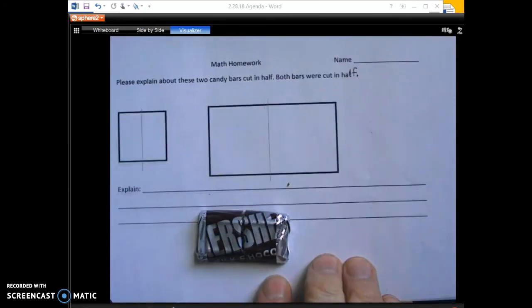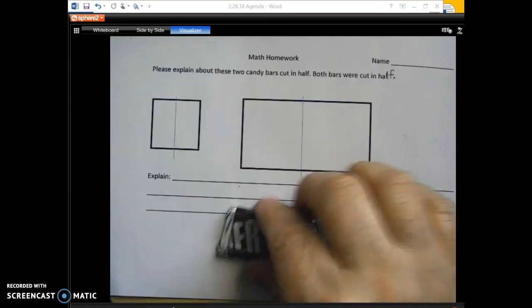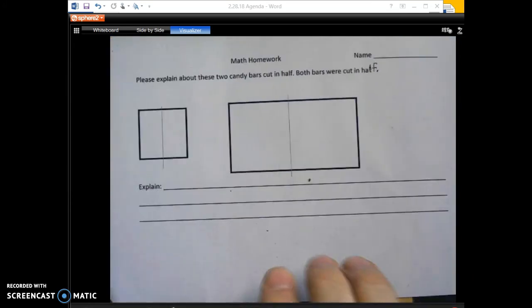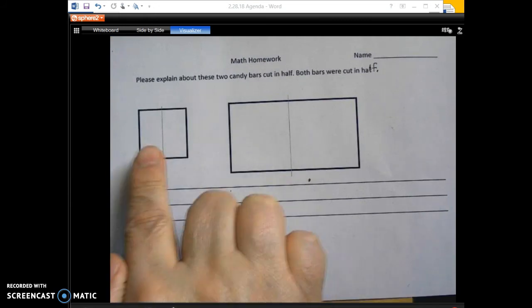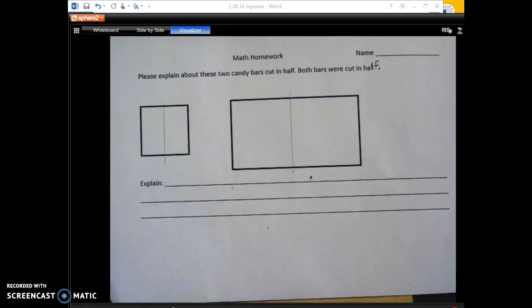When we look at the sheet right here, we have two rectangles. Both have been cut in half. I'm asking students to write their explanation on why it's not fair to get half of this candy bar compared to half of this candy bar. When you write it out, make sure you're talking about comparing it to the whole.